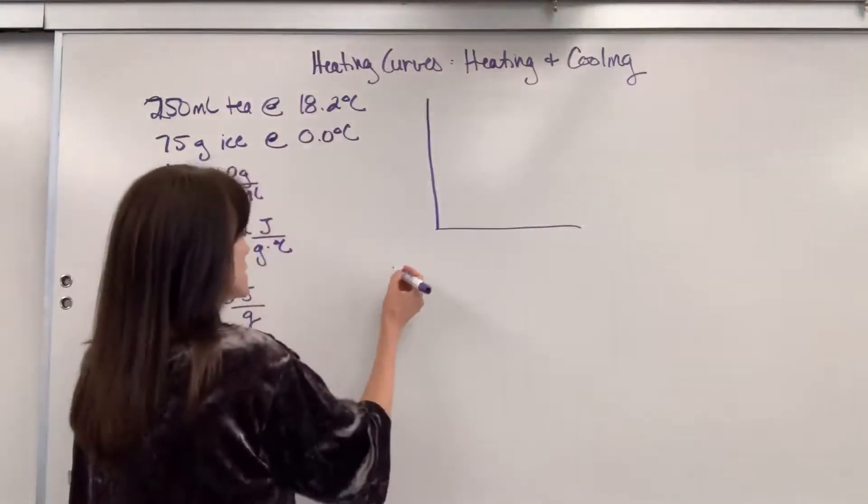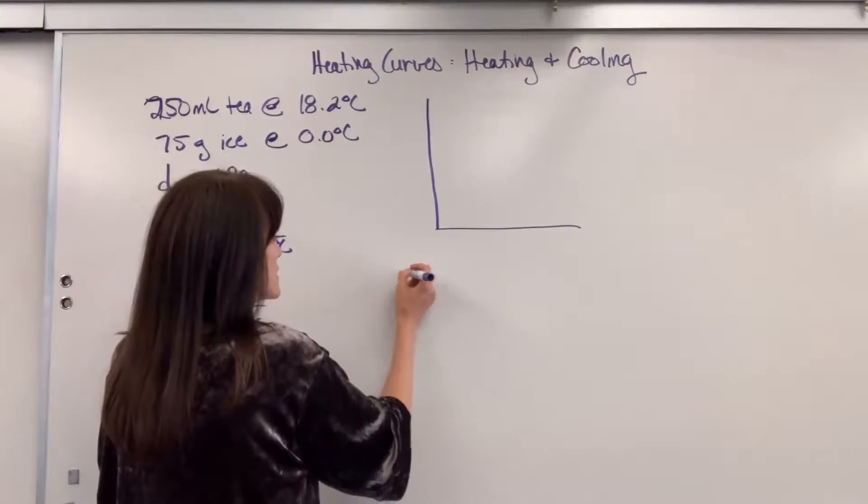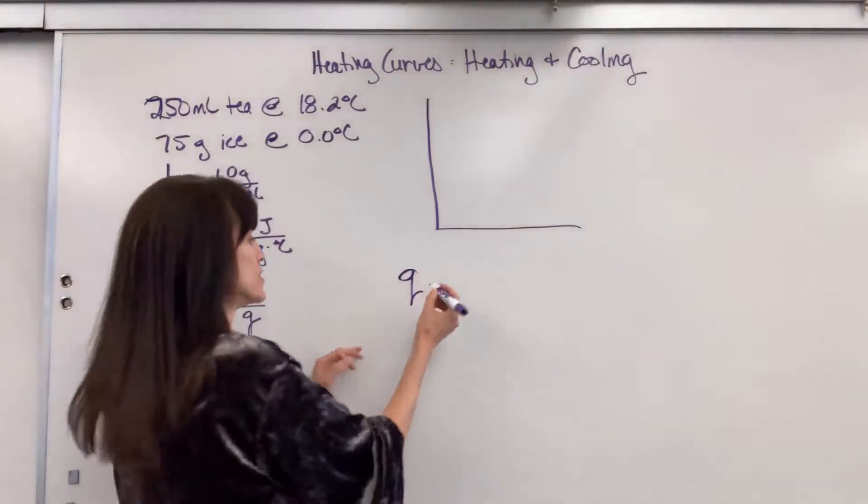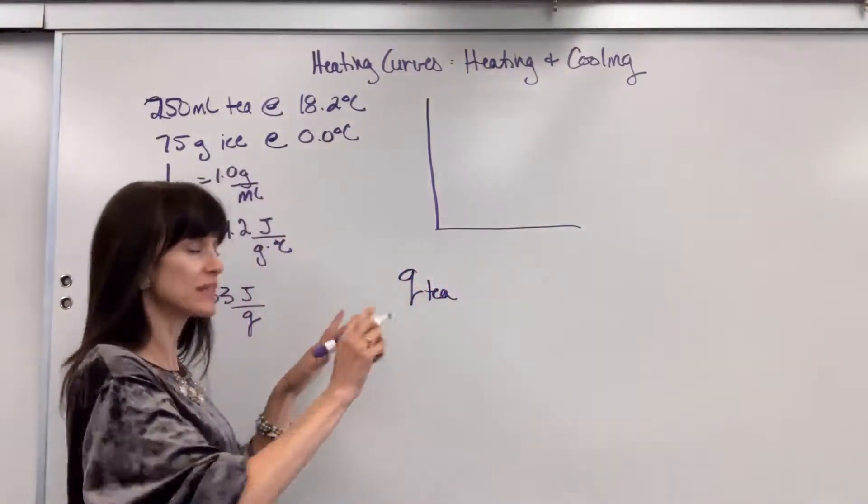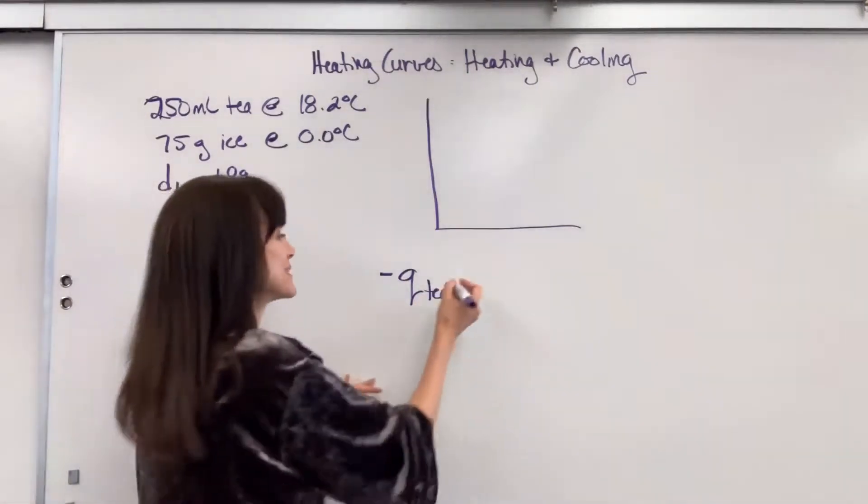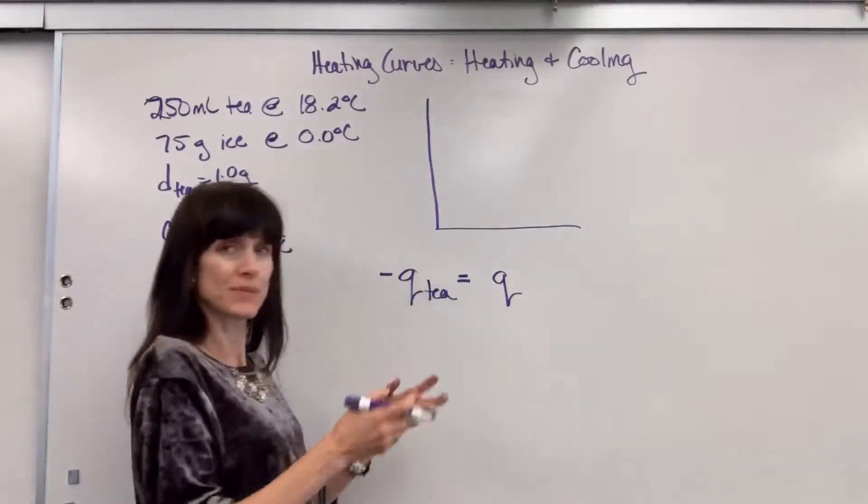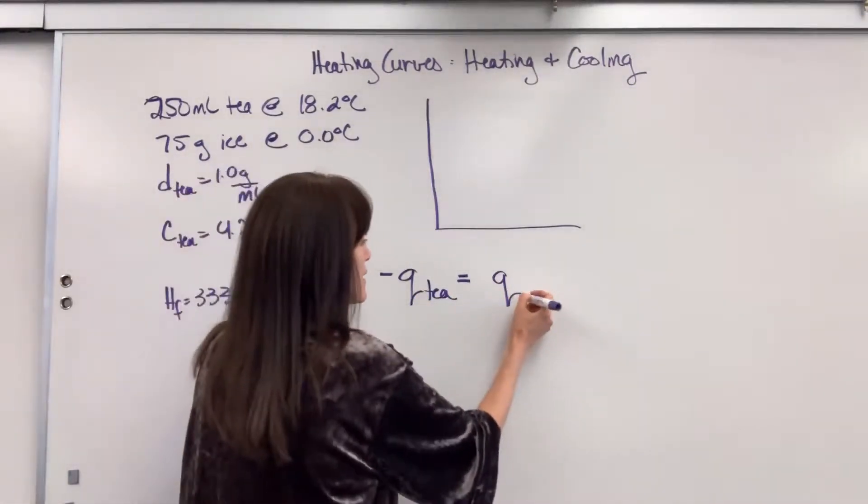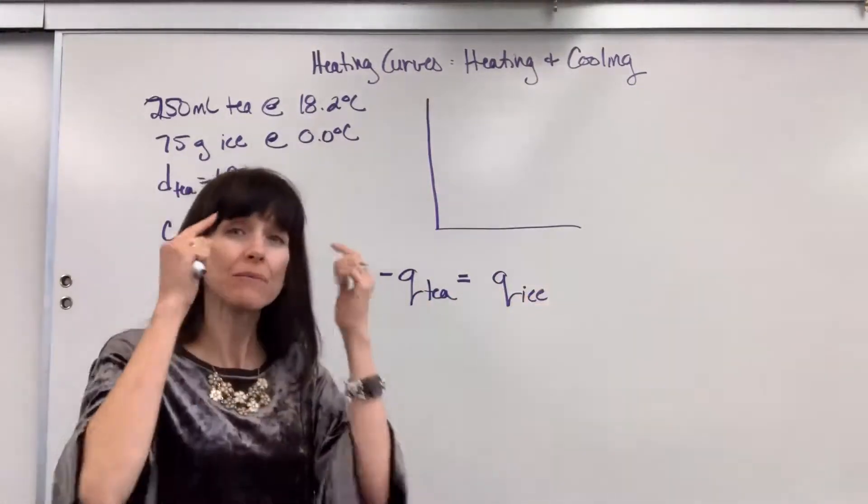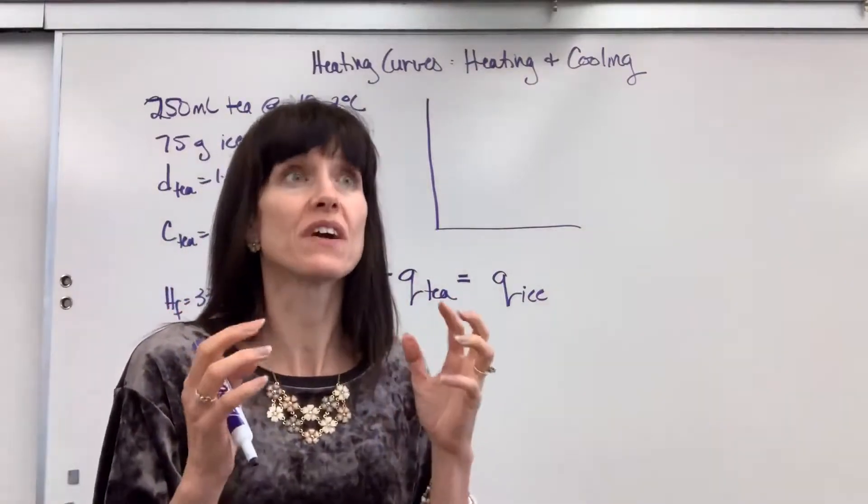So we are going to write the Q, the energy of the tea, and that's releasing, so I put a negative. The amount of energy released has to equal the amount of energy absorbed by the ice. That's what I start thinking. Where is the energy transferring? Hot to cold, what's happening?